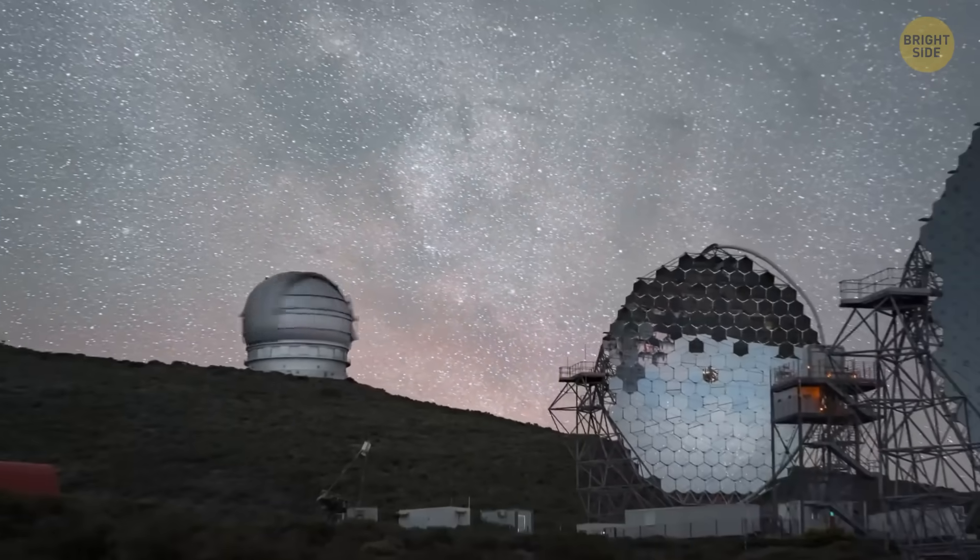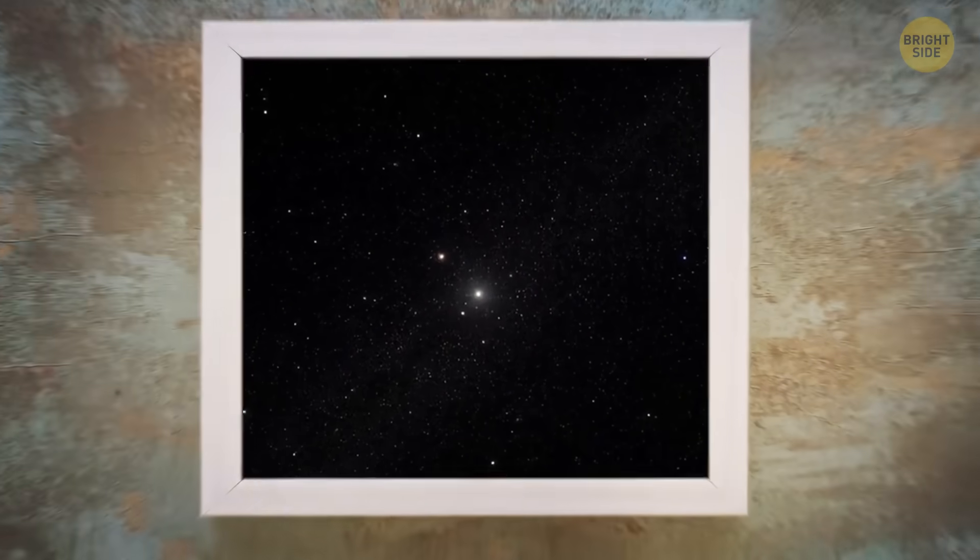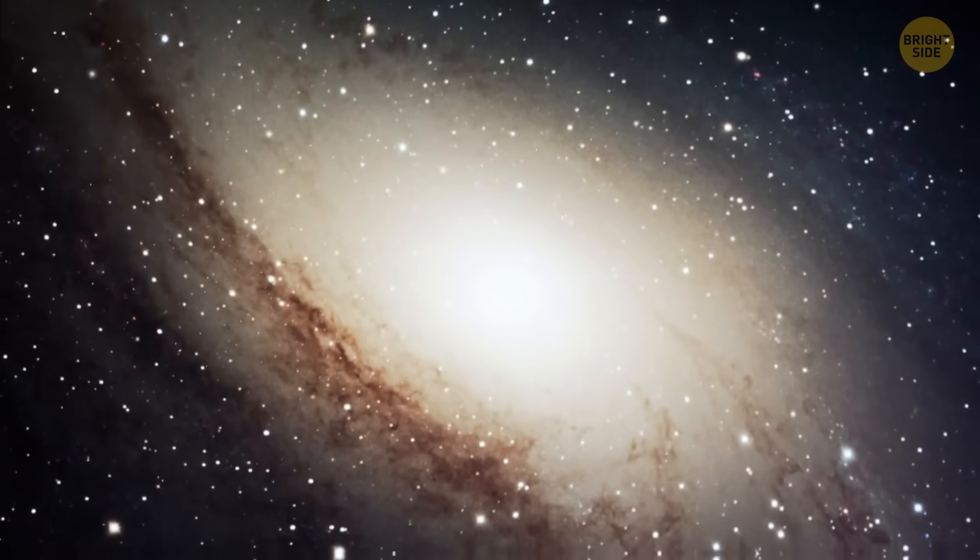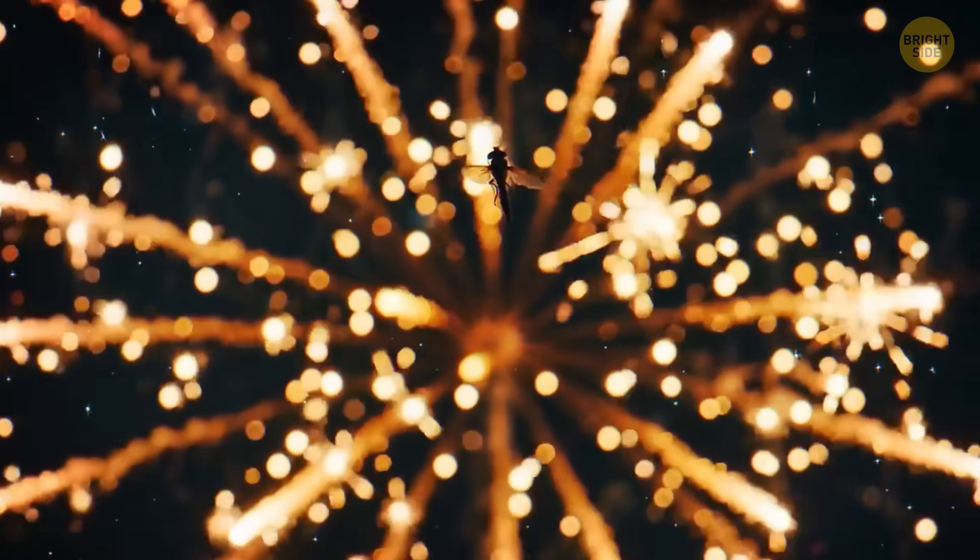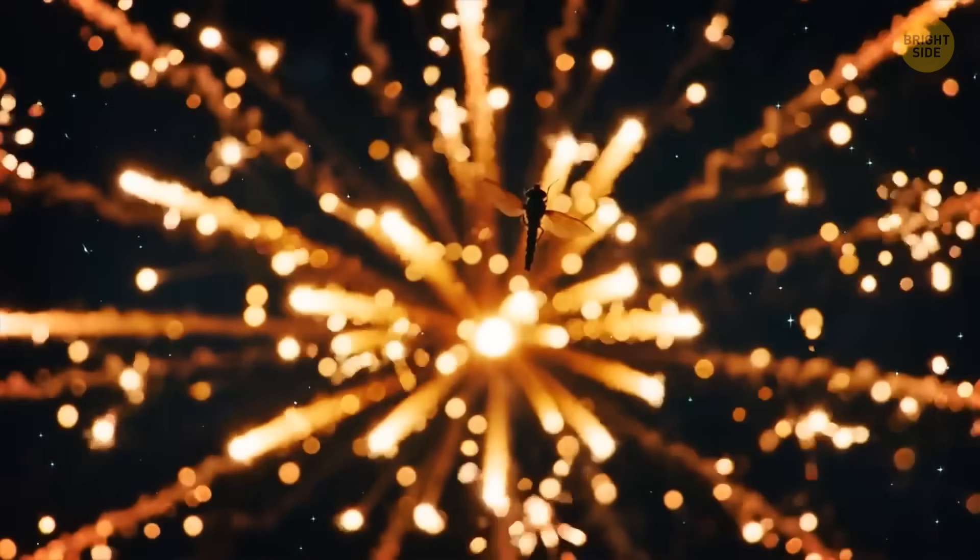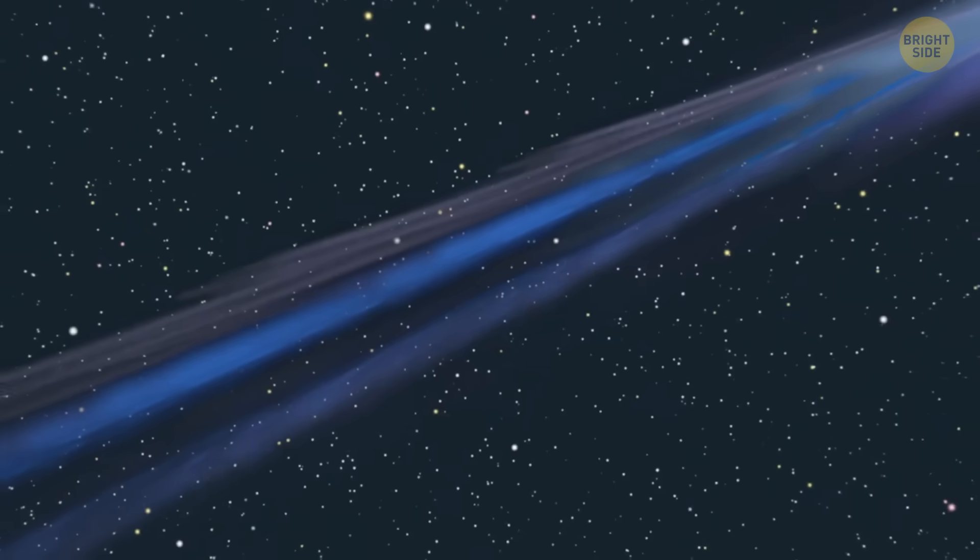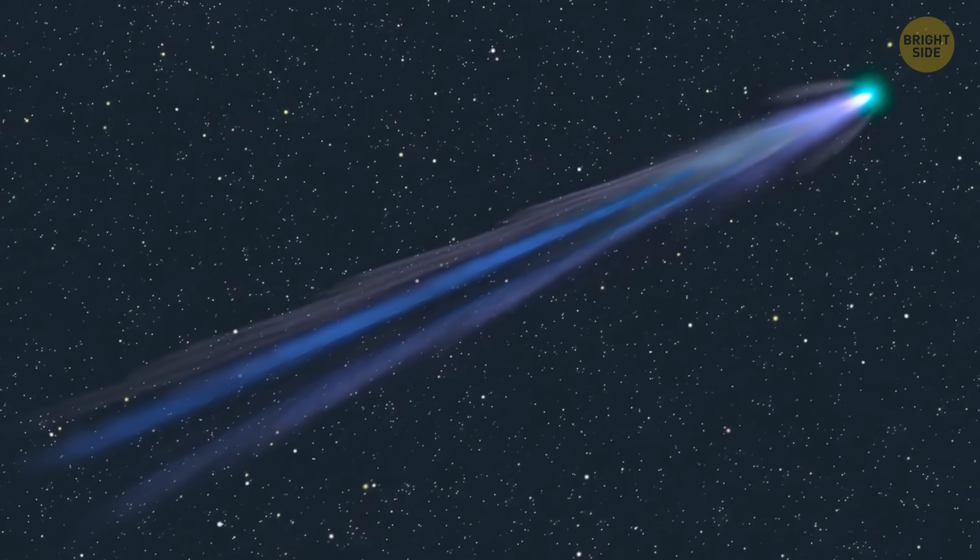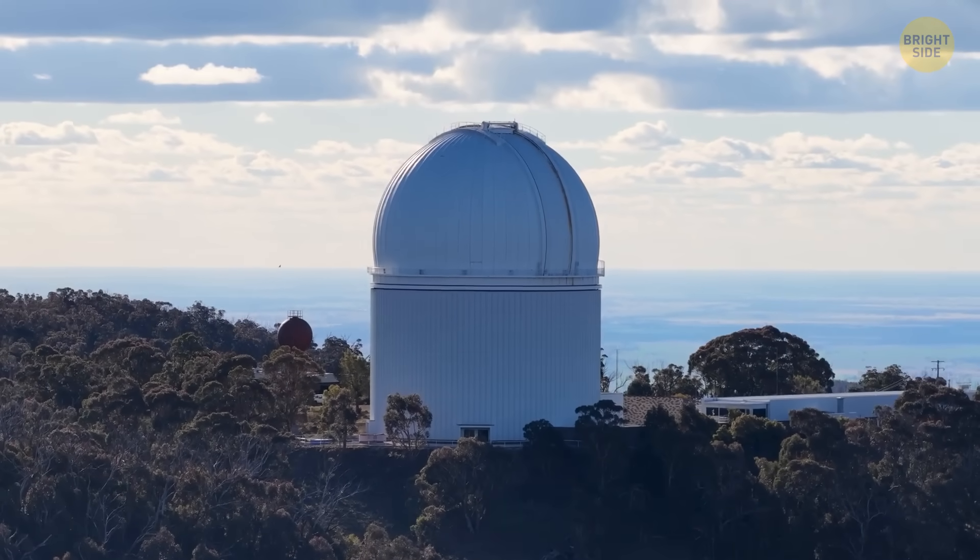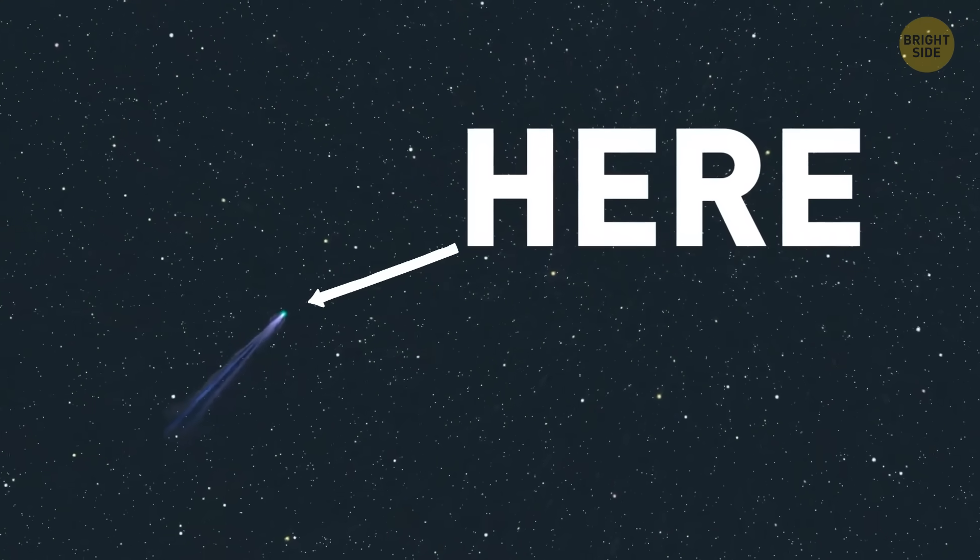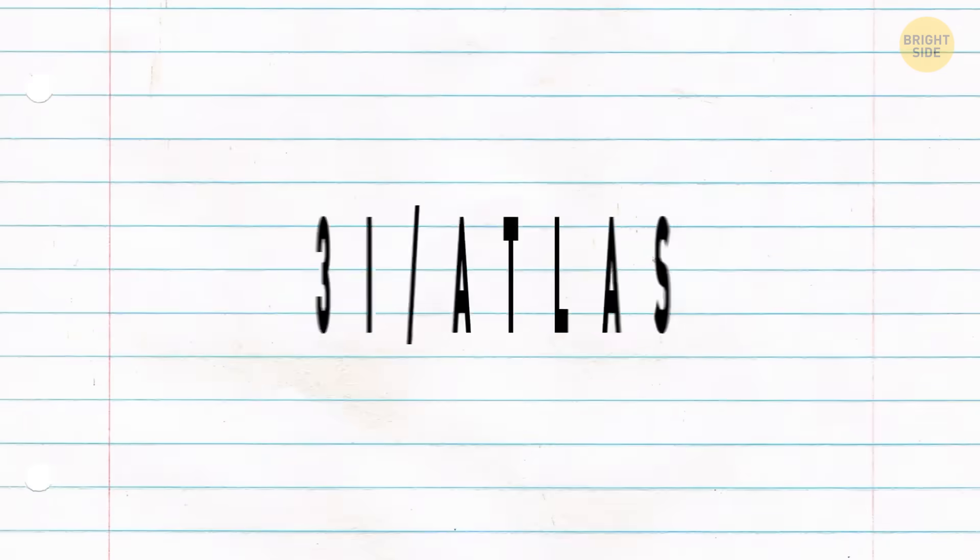Later, it turned out that even before the July 1st discovery, this comet had already been spotted in earlier photos from the end of May and June. But no one knew what it was back then because it was hiding in the dense, star-filled area near the center of our galaxy. So it was like trying to spot a firefly in a fireworks show. At first, some astronomers thought it might just be an asteroid because it didn't seem to have that usual fuzzy glow or tail that comets have. But by July 2nd, powerful telescopes in Chile, Arizona, and Hawaii caught a faint tail and a little cloud of dust around it. The classic signs of a comet. And once they confirmed this, the comet got its official name.